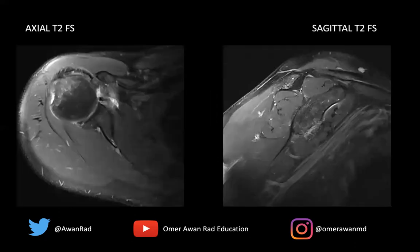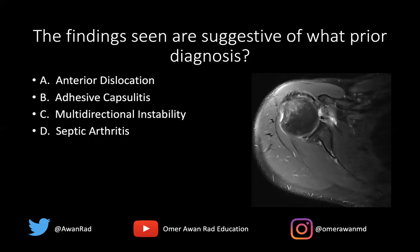I want to come back because I think the sagittal is also telling for what we're trying to see here. So what prior diagnosis do they have between these four? The answer here is an anterior dislocation — anterior glenohumeral dislocation.